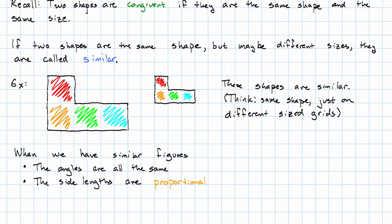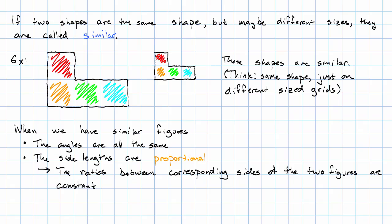What do I mean by that? One way to think about it is the ratios between corresponding sides of the two figures are constant. In this example up here, the ratio is a half. Here's a side of the big figure—it's four units long. Here's the corresponding side of the little figure—it's two units long.